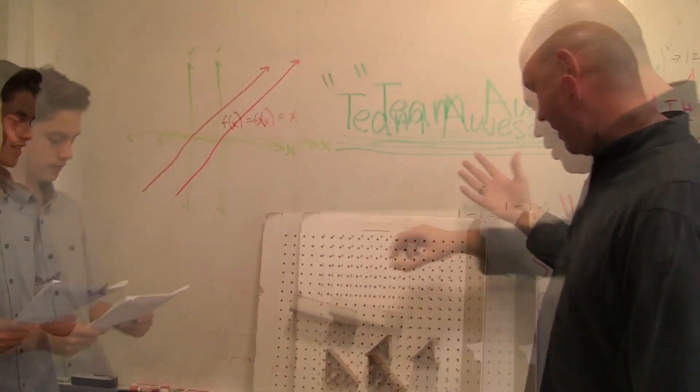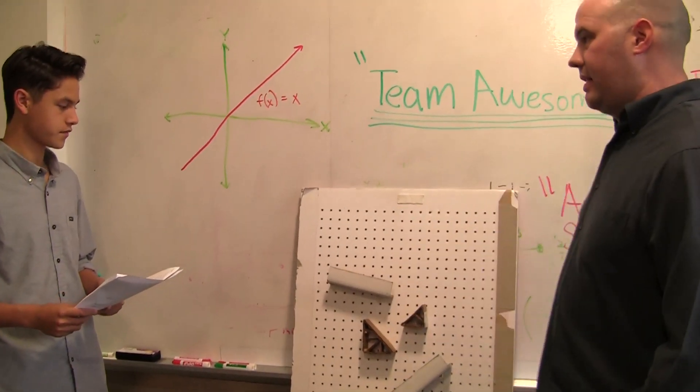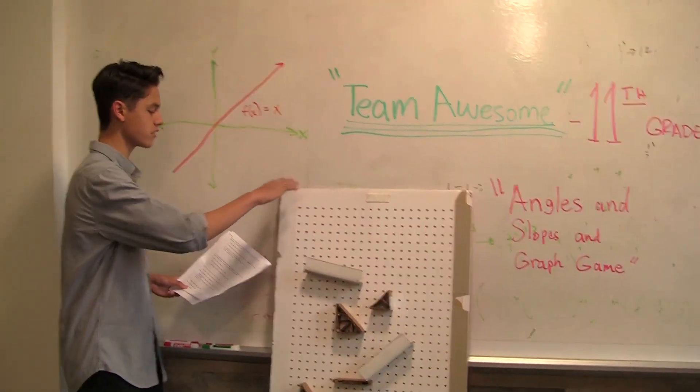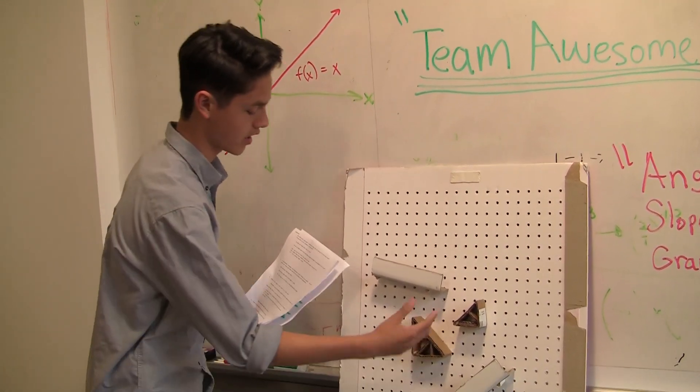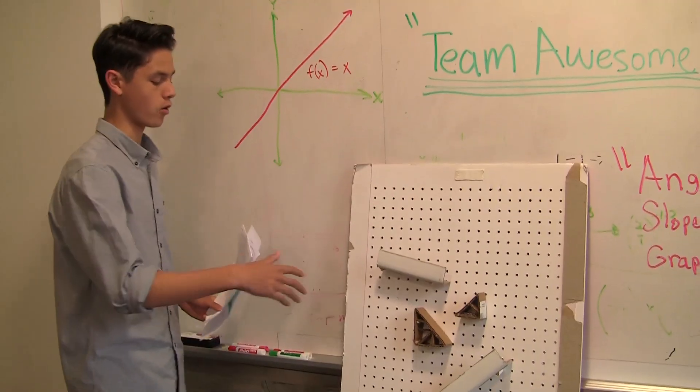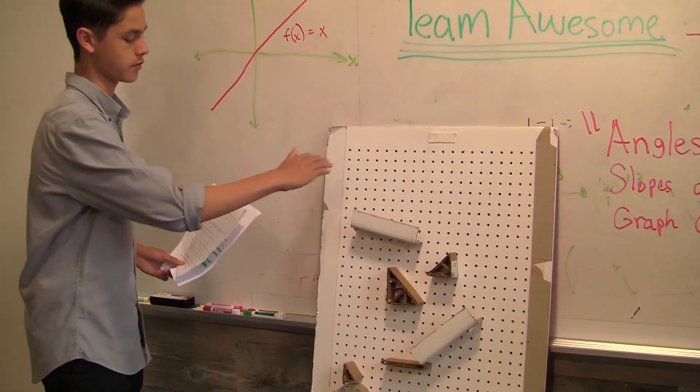All right, thank you. Now, what parts did you use and how did you make this? So as you can see, I used a pegboard to simulate a graph, and then I used cardboard and glue and scissors in order to make the individual pieces and support them in order to have the ball roll down from the top to the bottom.